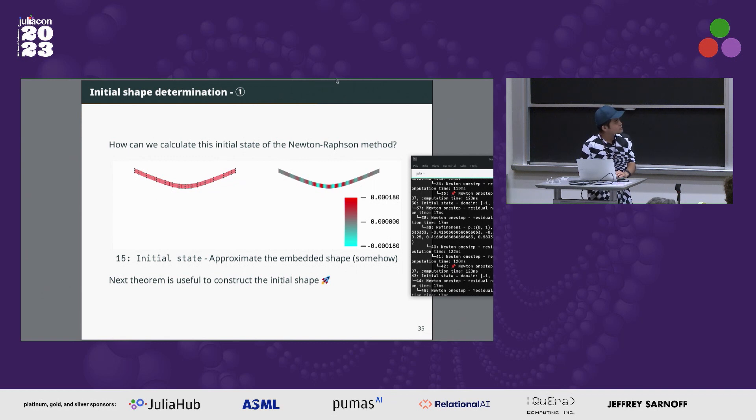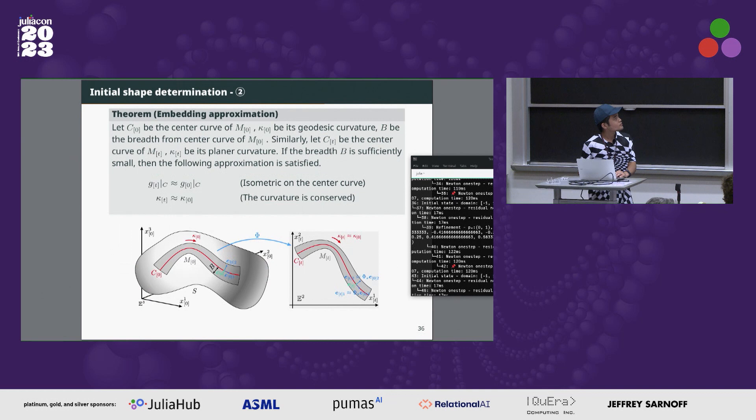To create this shape we use the next theorem. The statement of the theorem is a little wrong, but the key points are: the mapping phi is almost isometric, especially on the center curve of the strip, and the geodesic curvatures of these curves are almost equal. By using these properties, the embedded shape Mt can be approximated and can be used as the initial shape of the Newton-Raphson method.